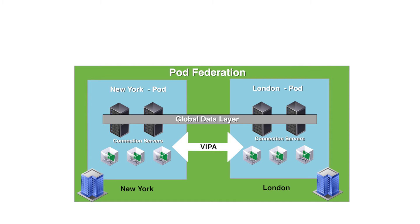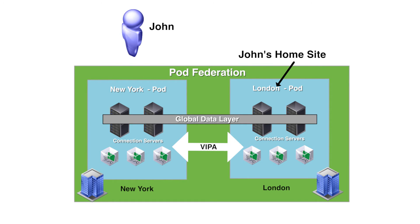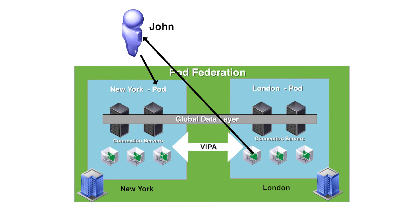Let's look at an example of a global entitlement whose home site policy is enabled. In this example, an entitled user named John has a home site in London, but he's traveling and is connected to a View connection server in New York. The global entitlement's use home site policy causes View to start looking for a desktop in John's home site in London. If a desktop is not available in John's home site, View looks for a desktop in the other sites in the pod federation.